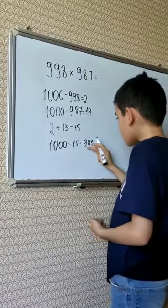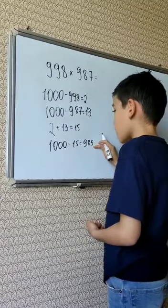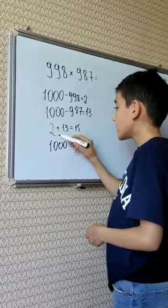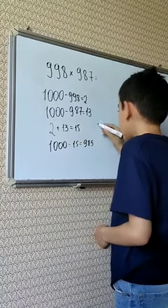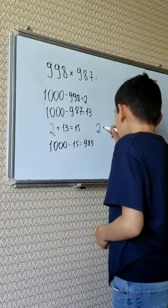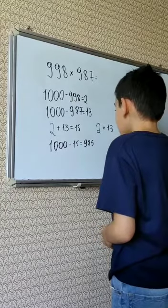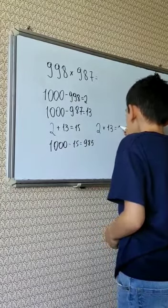That's the first three numbers of our answer. And then we need to multiply 2 by 13. 2 multiplied by 13 is 26.